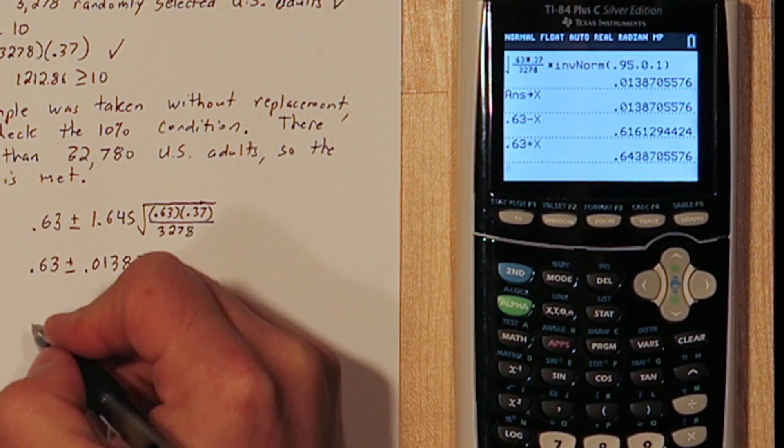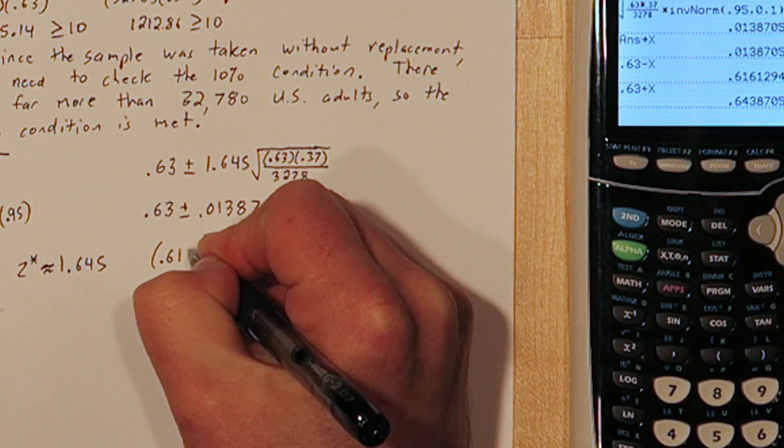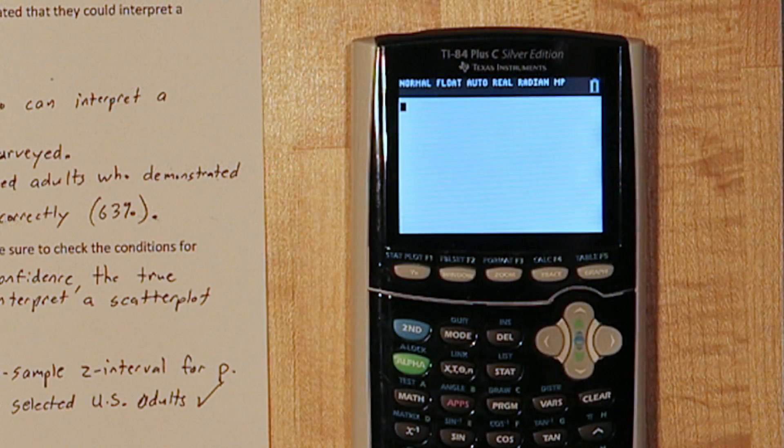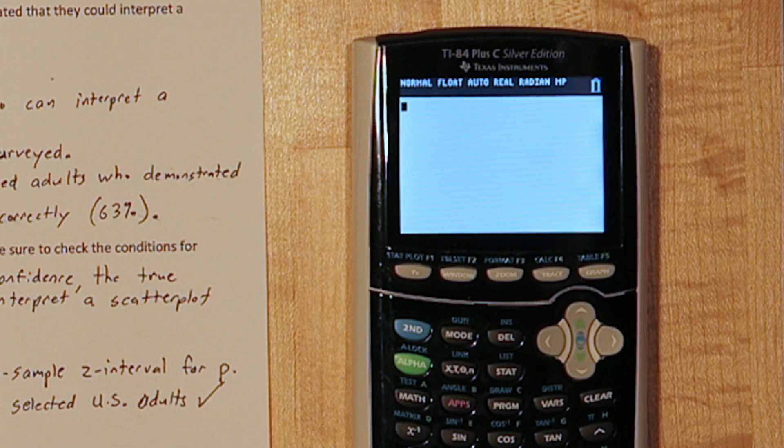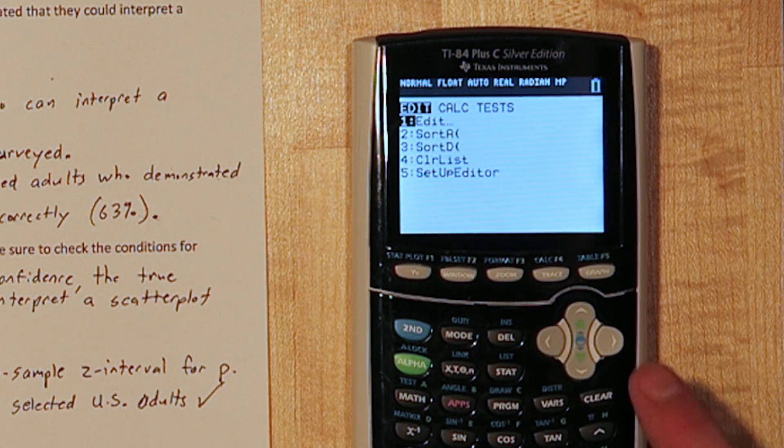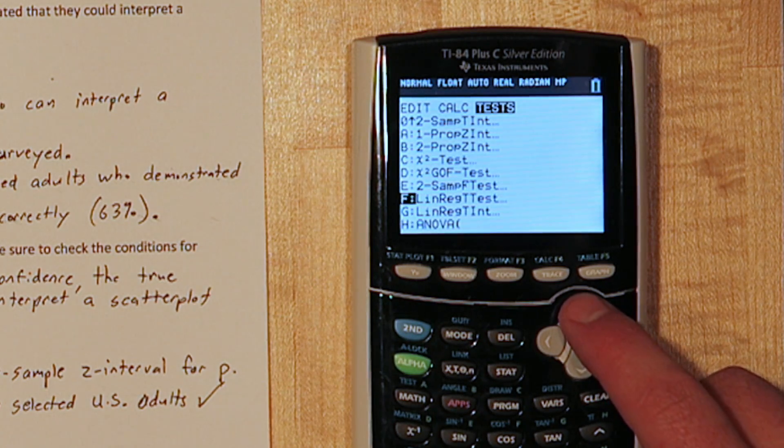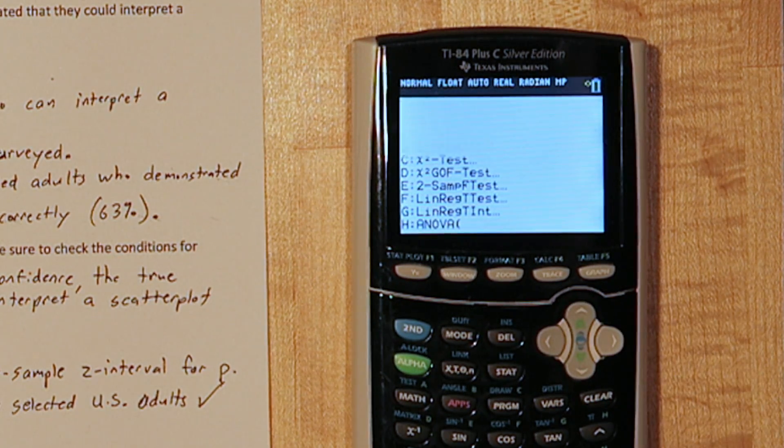We actually don't have to do this by hand. We can calculate it very quickly on the calculator. Press the stat button and go over to the test menu. Near the bottom, option A on this calculator, is one prop z interval.